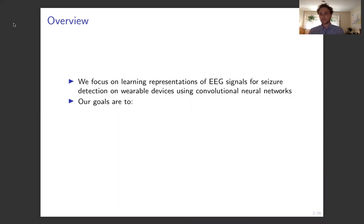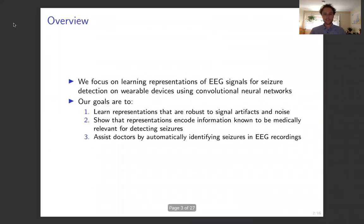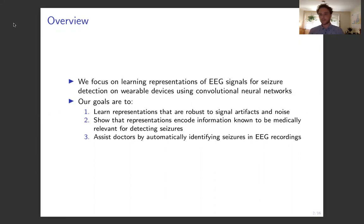Our goals are threefold. First, we want to learn representations that are robust to signal artifacts and noise that occur during data collection. Second, we want to show that these representations encode information that's known to be medically relevant for detecting whether or not someone is having a seizure. And third, we want to assist doctors by automatically identifying regions of probable seizures in EEG recordings.